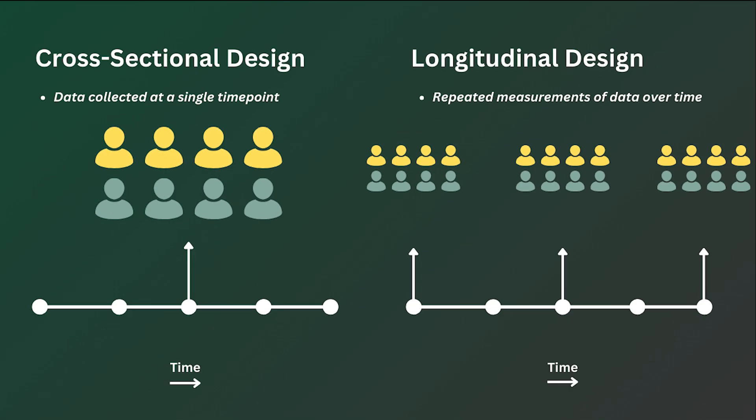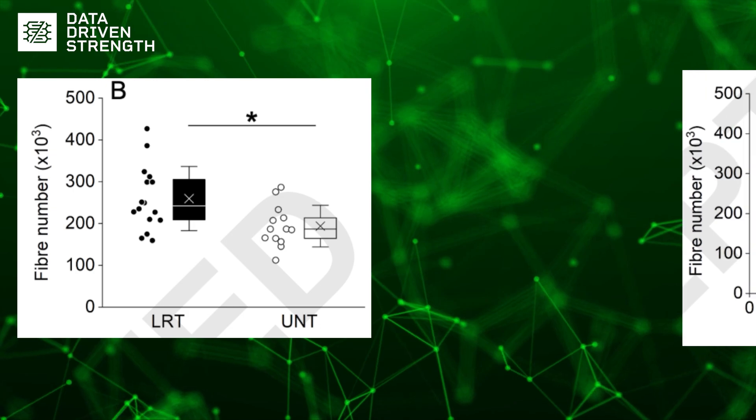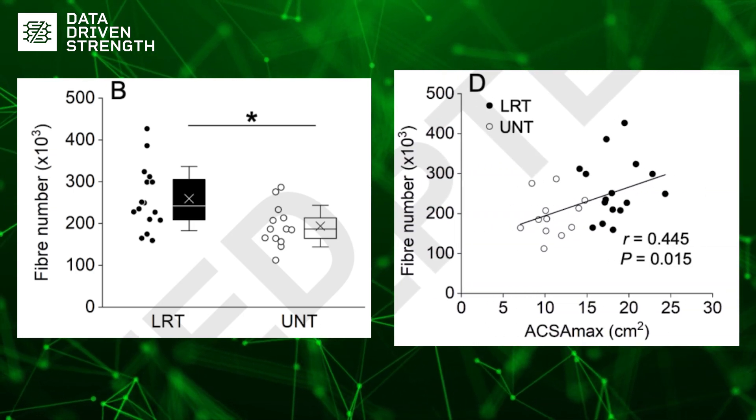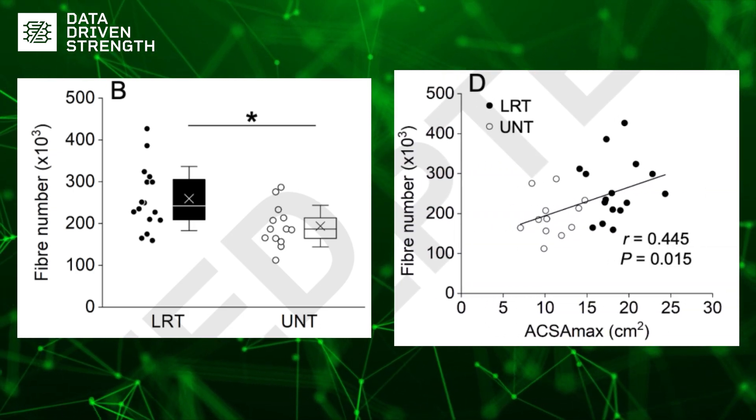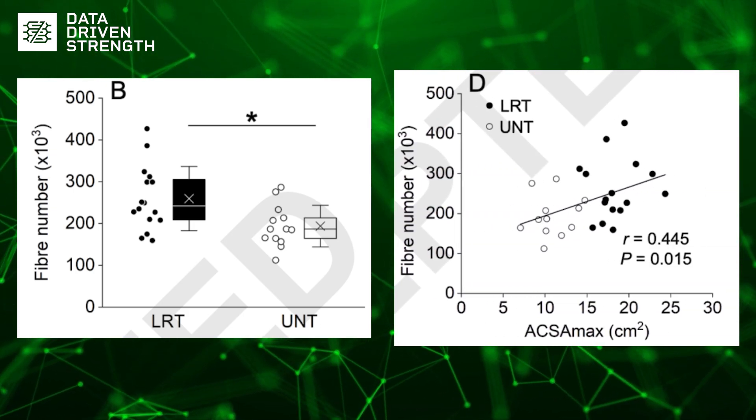The recent study by Mayon and colleagues utilized a simple cross-sectional study design. Various measures in muscle architecture were assessed in 16 trained and 13 untrained participants. The variable with potentially the most interesting findings was the estimated fiber number, calculated by dividing the total muscle size by the average fiber size. The results showed not only greater total muscle size in trained individuals, but also a greater estimated fiber number.